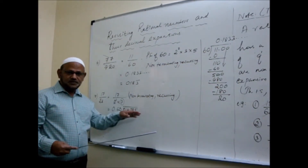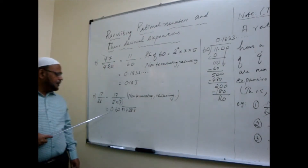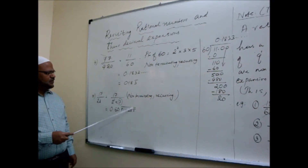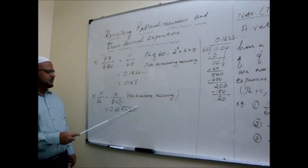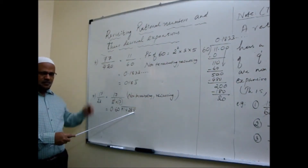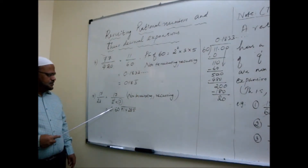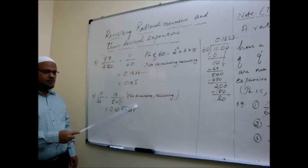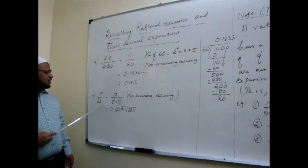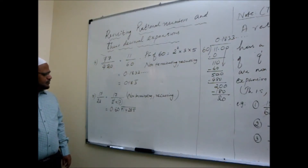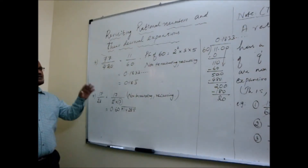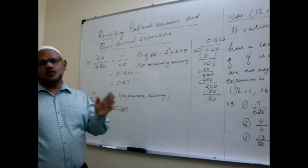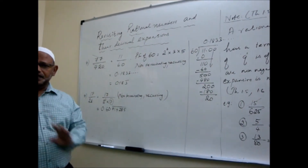Cross-check by dividing — I just check; this will not be asked as I told you. If we divide, we get 0.60 then 714285... These 6 digits will repeat. We have seen 1 by 7 in that way. So because of the 7, this is going to have non-terminating repeating decimal. This procedure helps you to decide whether we will have a terminating decimal or a non-terminating recurring decimal.